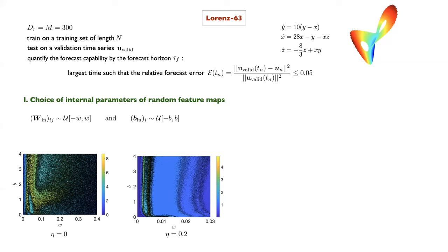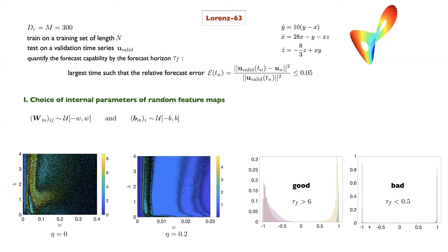Good and bad parameter choices can be understood by examining the argument of the tanh function: w_in · u + b. Bad choices are when all values lie in the plateau of tanh (saturated at ±1), giving no discriminating information, or when all values cluster near zero, making the random feature map essentially linear. Good choices explore the nonlinear part of the tanh function.